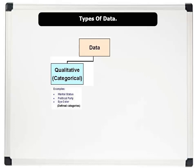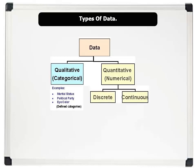Examples include marital status, political party, eye color, etc. 2. Quantitative data, which are numerical and have number values. Also, quantitative data can be split into discrete and continuous data.